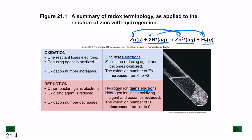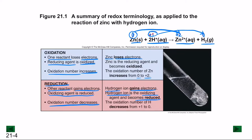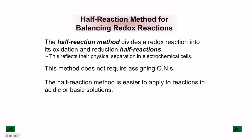One reactant loses electrons — the reducing agent — and its oxidation number increases (here zinc goes from zero to plus two, so it undergoes oxidation). The other reactant gains electrons — the oxidizing agent — and its oxidation number decreases. Hydrogen ion decreases from plus one to zero, resulting in a reduction reaction.